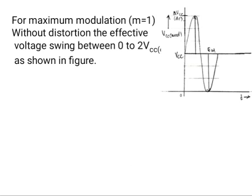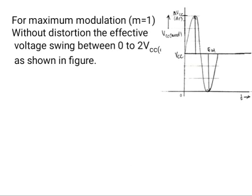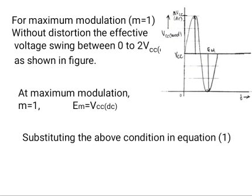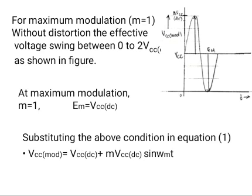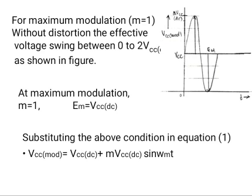For maximum modulation, M = 1, that means 100% modulation. Without distortion, the effective voltage swings between 0 to 2·VCC_DC as shown in the figure. At maximum modulation M = 1, Em = VCC_DC. Substituting this condition in equation 1: VCC_mod = VCC_DC + M·VCC_DC·sin(ωm·t), which gives VCC_mod = VCC_DC · (1 + M·sin(ωm·t)).